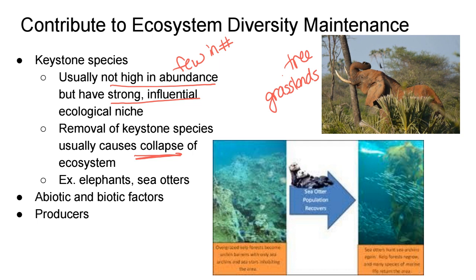Sea otters keep the urchin population in control. When sea otters are removed, urchins grow like crazy and will completely wipe out the kelp population — you can see it's all bare rock on the left. By having the otters there, it keeps the urchin population in check so the entire kelp population isn't wiped out for all the other organisms.